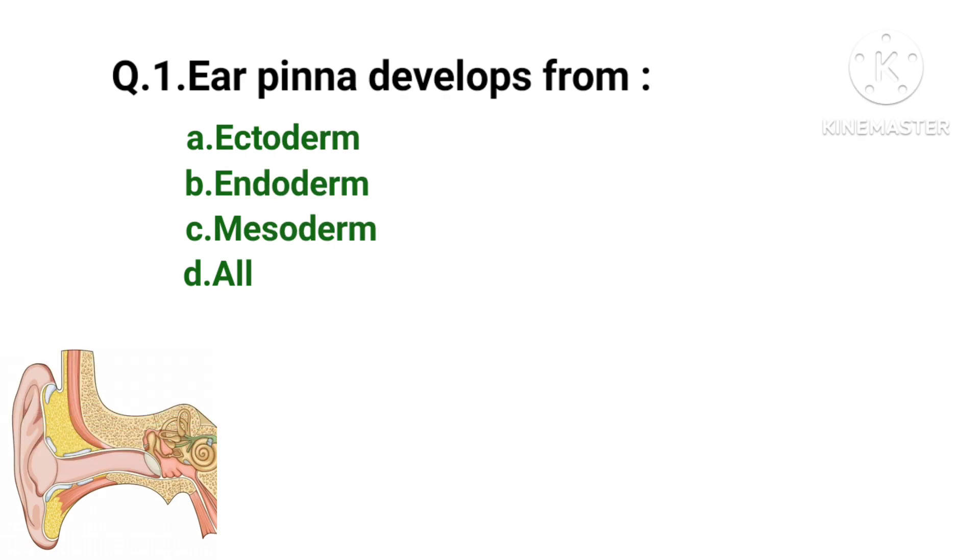Ear pinna develops from ectoderm, endoderm, mesoderm, or all of the above. Ear pinna develops from ectoderm.